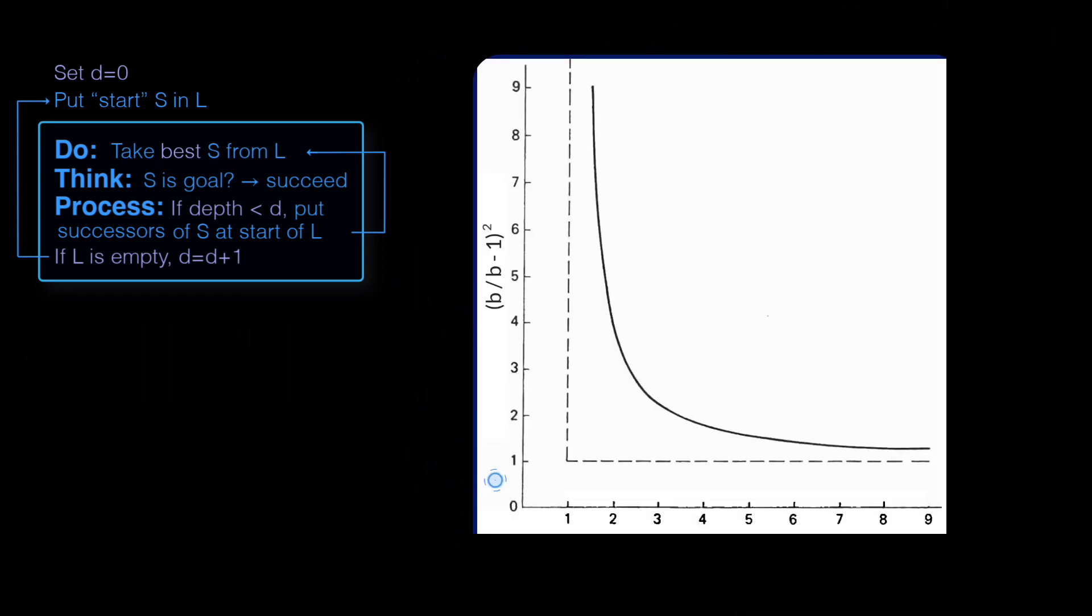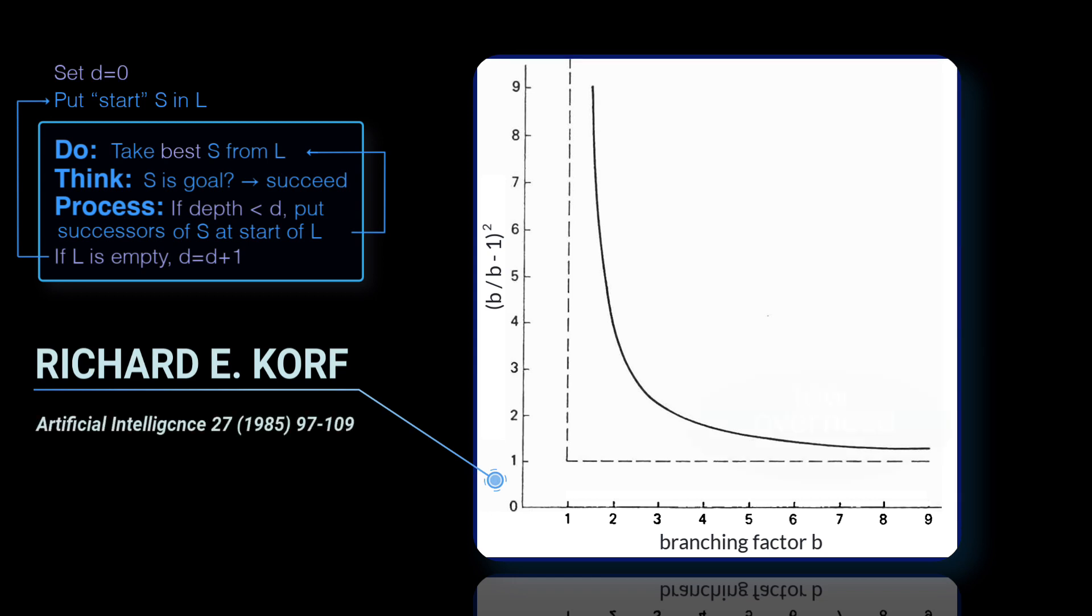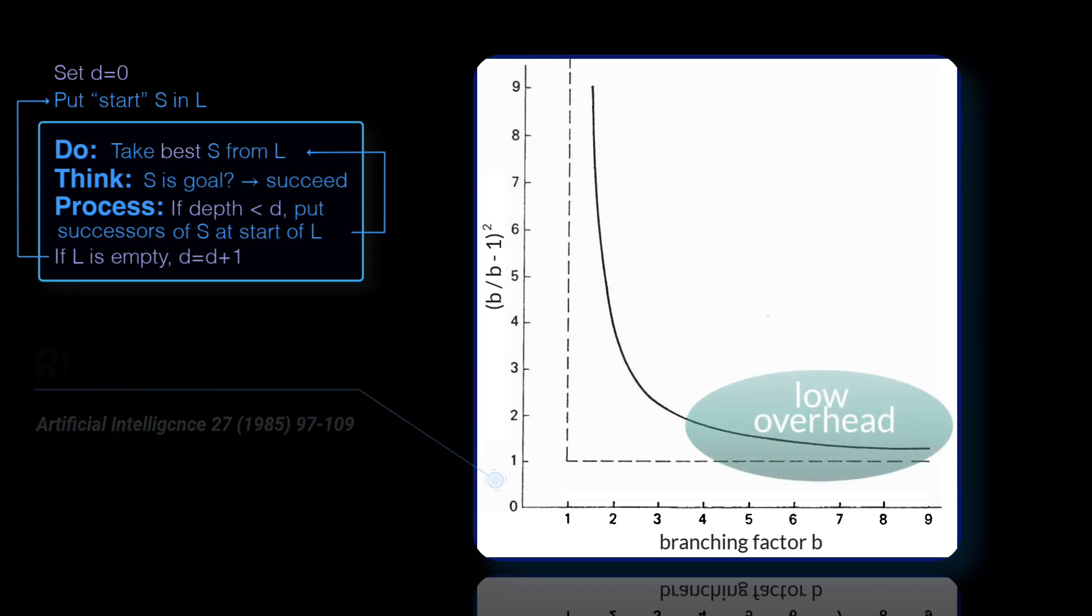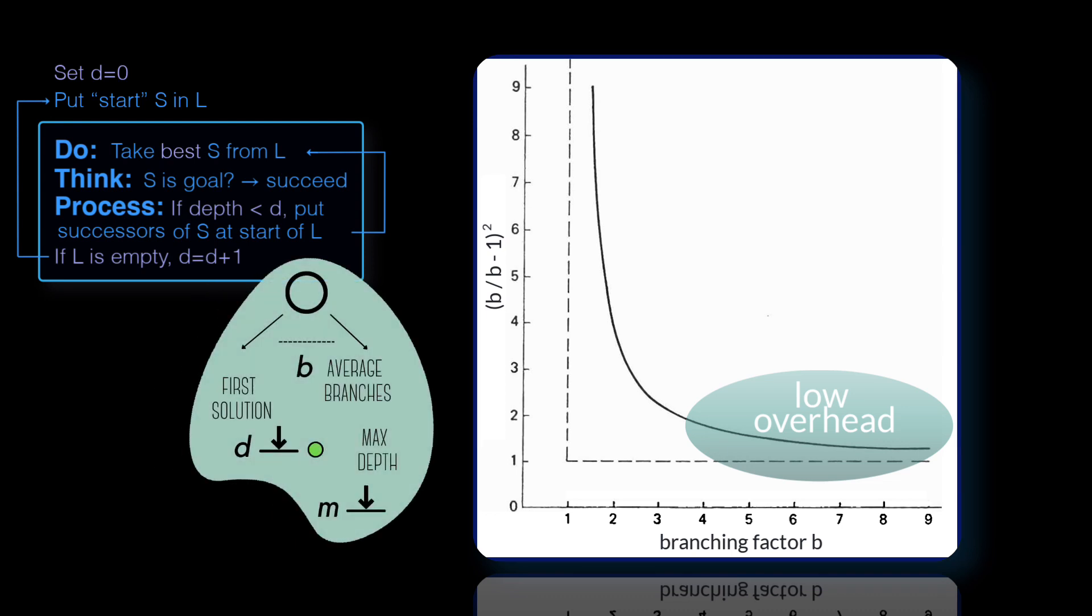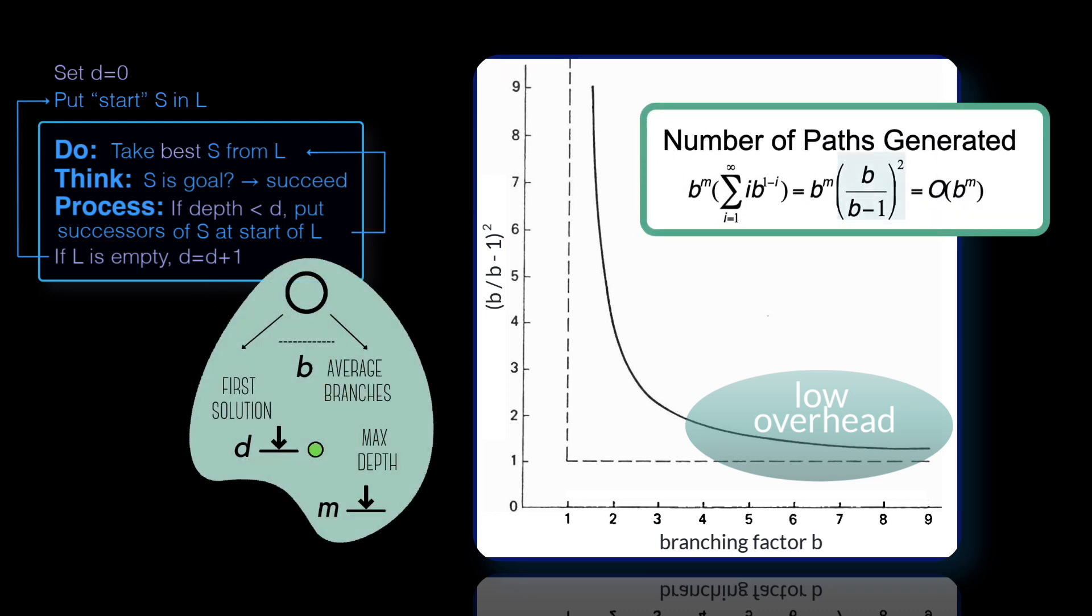The math shows that the overhead of repeating nodes on each iteration is small. The x-axis on this graph is the branching factor of the search. And the y-axis is the overhead, calculated by summing all the nodes that iterative deepening has to look at.